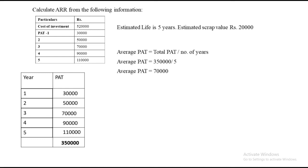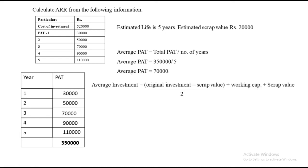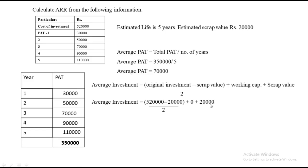Next, we need to find average investment. The formula is: original investment minus scrap value, divided by 2, plus working capital, plus scrap value. The original investment is 5,20,000 and the scrap value is 20,000. There is no working capital given. Substituting: (5,20,000 minus 20,000) divided by 2, plus 0, plus 20,000. The answer we get is 2,70,000 rupees — that is our average investment.